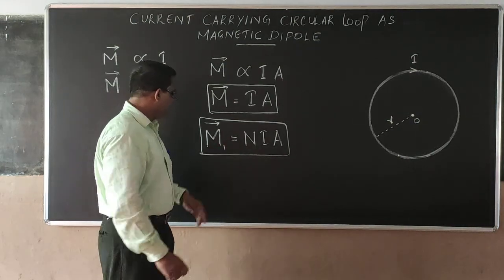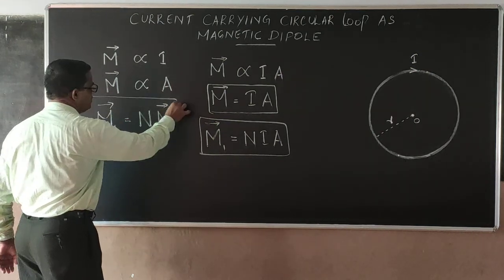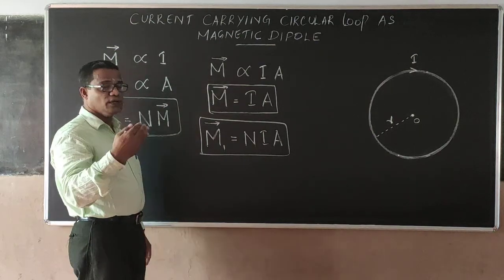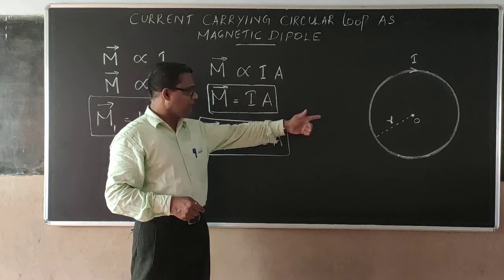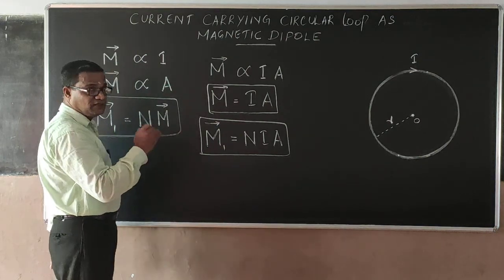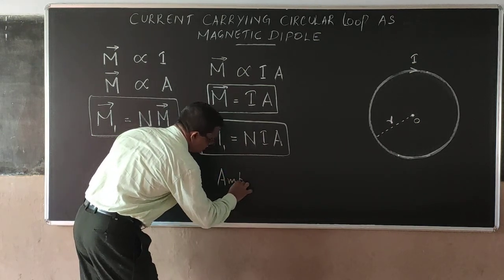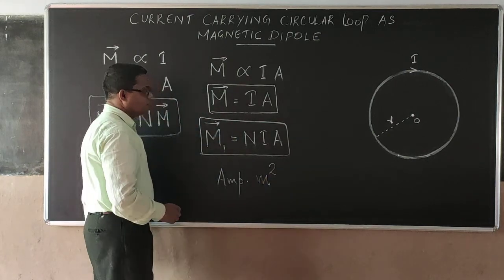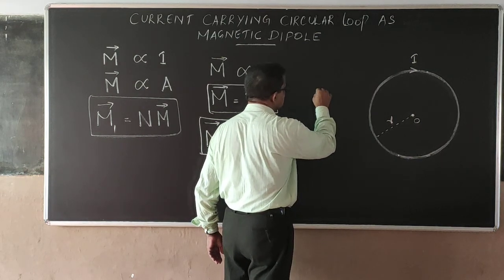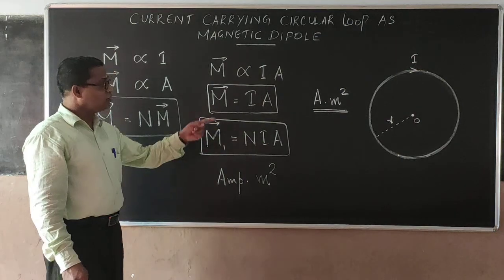As the number of turns increases, the magnetic moment also increases. You can express area A in terms of π r squared and substitute that into the formula. The unit of magnetic dipole moment is ampere meter squared — in short, A·m².